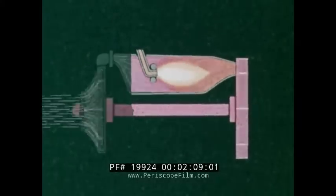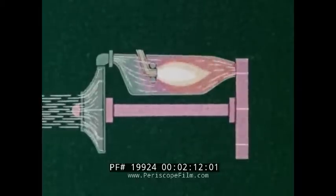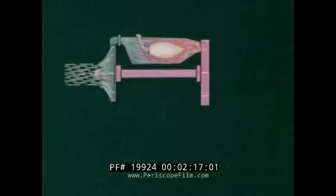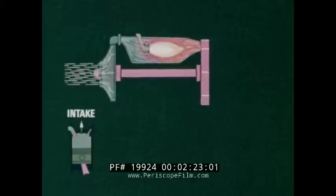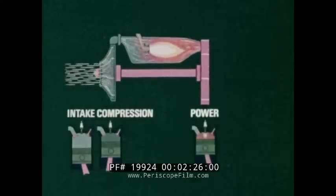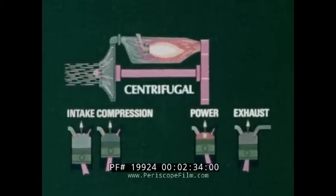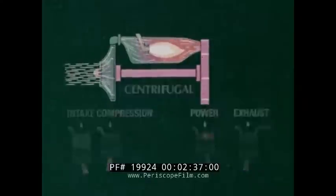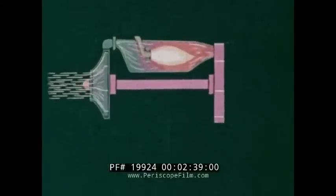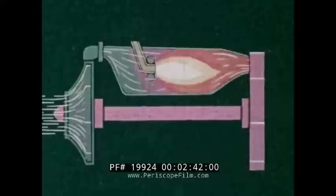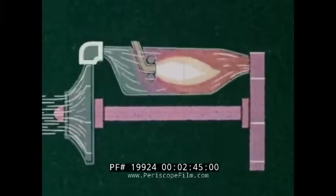The turbine shaft turns a compressor — a bladed wheel air pump that supplies the large quantity of air the engine uses in developing its power or thrust. As in a piston engine, the process begins with the intake of air, then compression, power, and exhaust. In the gas turbine, they all occur continuously. This compressor is a centrifugal type. The rotor takes in outside air at the center and throws it outward, giving it velocity and energy. A diffuser converts this energy to increased pressure for use in the combustion process.